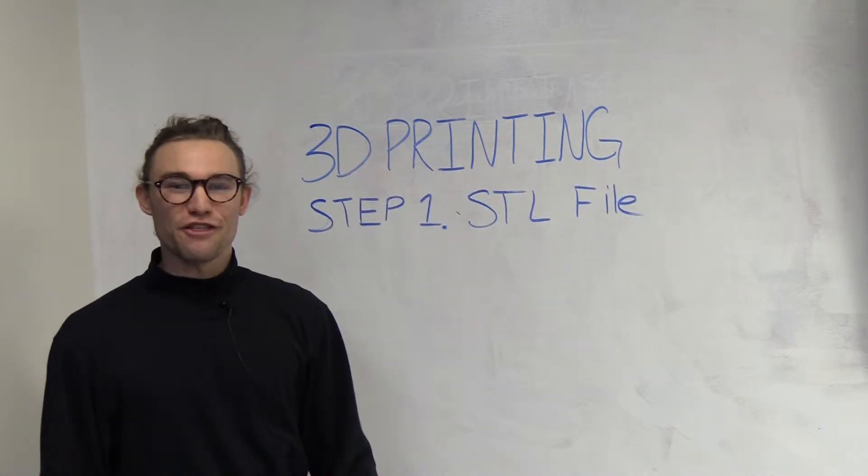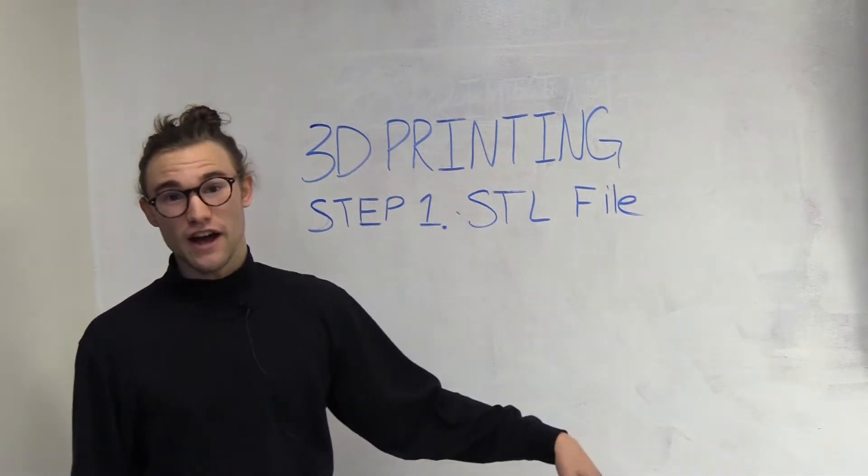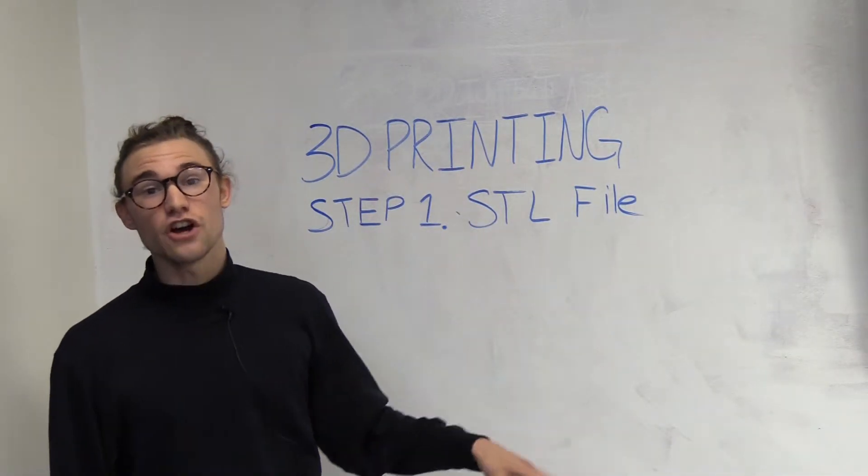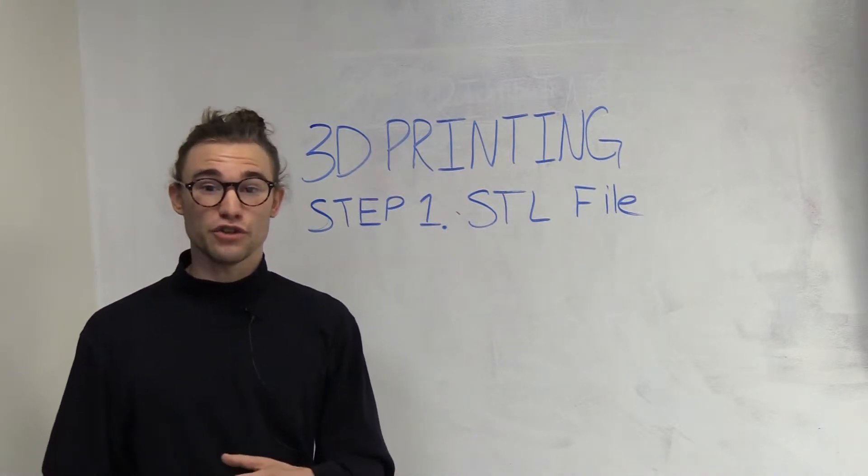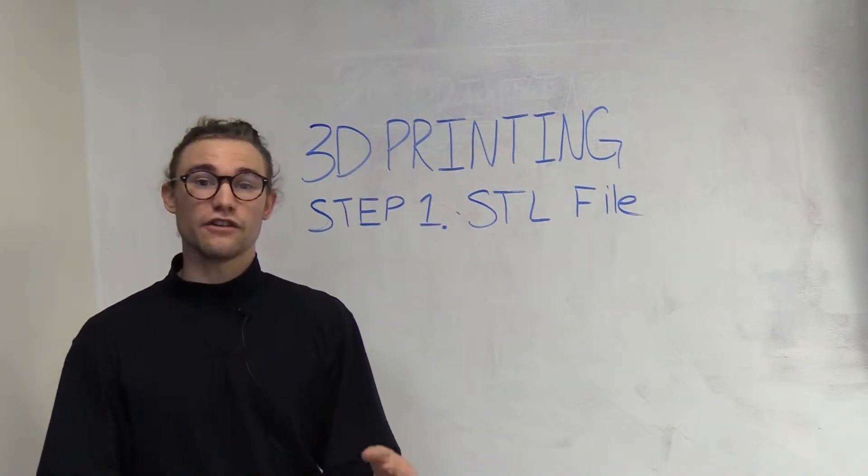Step one in the 3D printing process is obtaining an STL file. STL files are what the 3D printers use to read the images from the computer that you're processing into the printer.